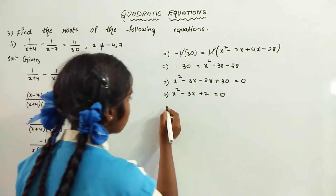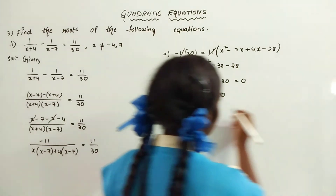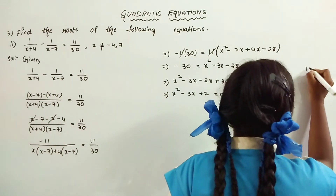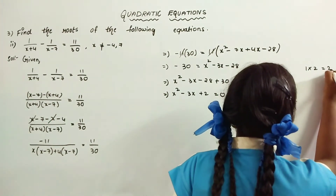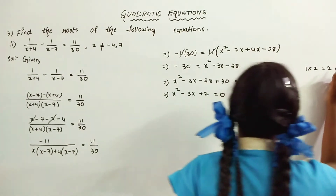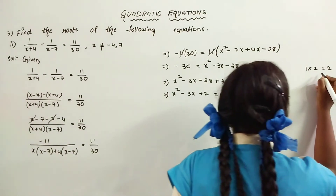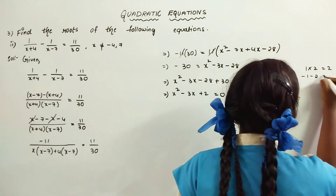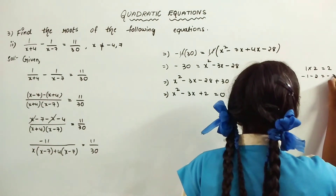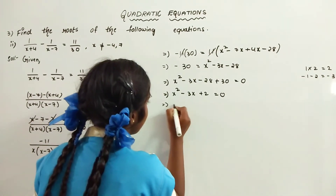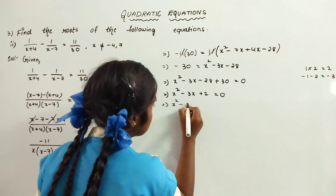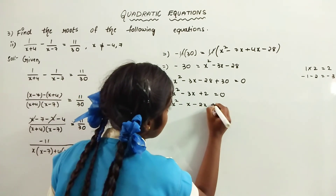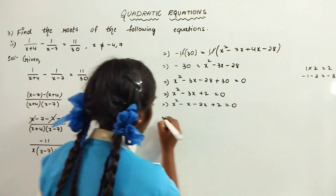Finding the factors of this equation: we multiply the first and last term, that is 1 into 2 equals 2. We need two numbers that add or subtract to give the middle term, which is minus 3. That gives minus 1 and minus 2. So x squared minus x minus 2x plus 2 is equal to 0.